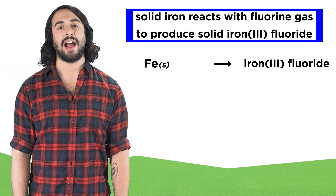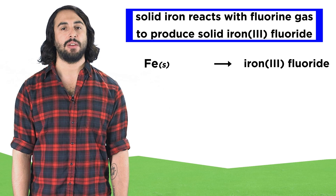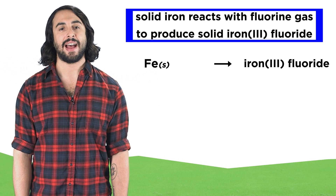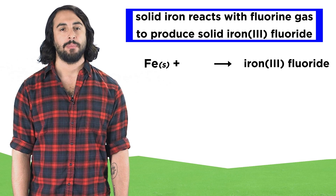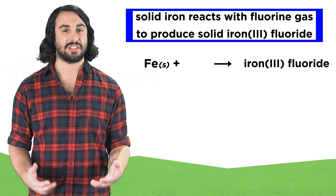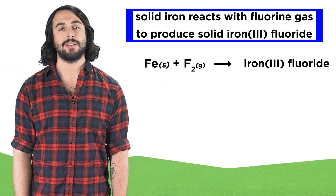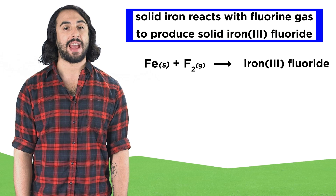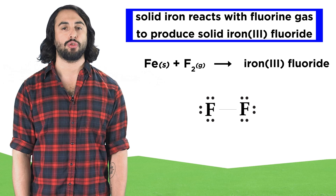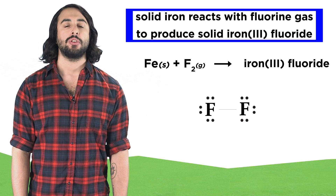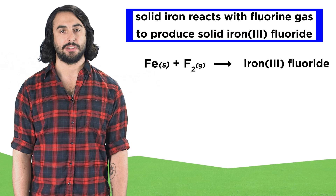The symbol for iron is Fe, and it's a solid, so let's write Fe with the subscript S in parentheses. Then we put a plus symbol, because the iron is reacting with something else. Fluorine has the symbol F, and fluorine gas is F₂, which we know from our ability to draw Lewis dot structures. So let's write F₂ with the subscript G in parentheses.